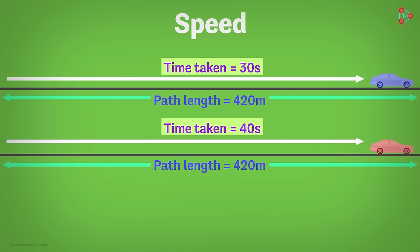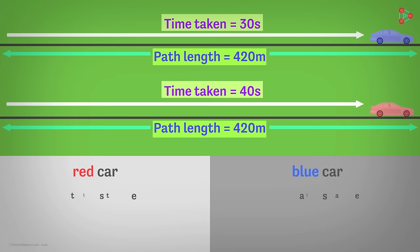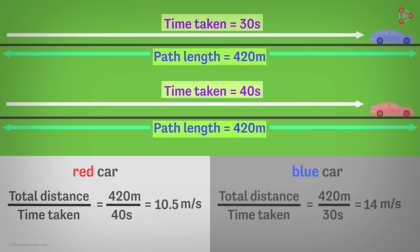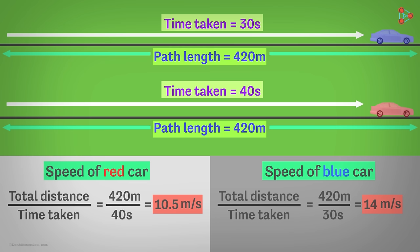Let the length of this path be 420 meters. This path length is nothing but the distance that the car travels in a given amount of time. Now for each object, if we take the ratio of the total distance covered and the time required to cover that distance, we will get this. This ratio is called the speed of the object.